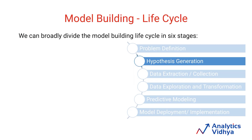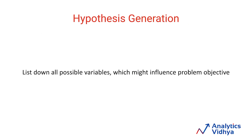Once you have defined the problem, you list down all the possible hypotheses which might solve the problem. It is important to make sure you list down all possible hypotheses at this stage. Hypothesis generation is listing down all the possible variables which might influence the problem objective, but care has to be taken that these variables should be free from personal bias and preference, since the quality of your model is highly dependent on the quality of your hypothesis.